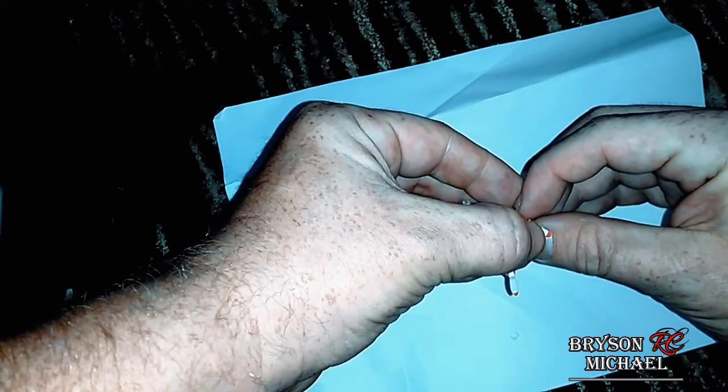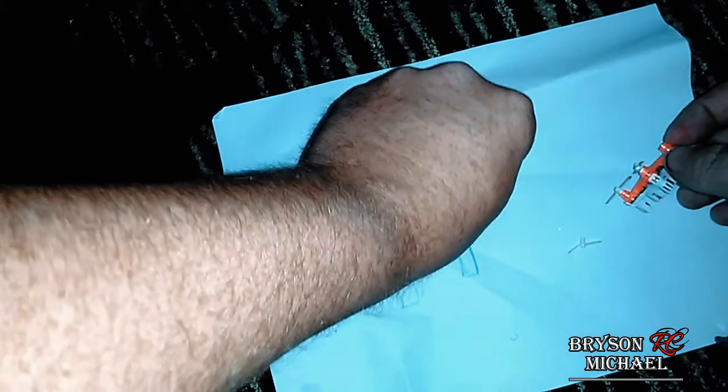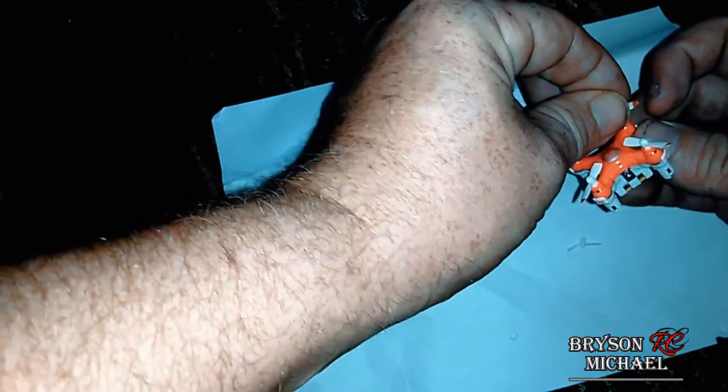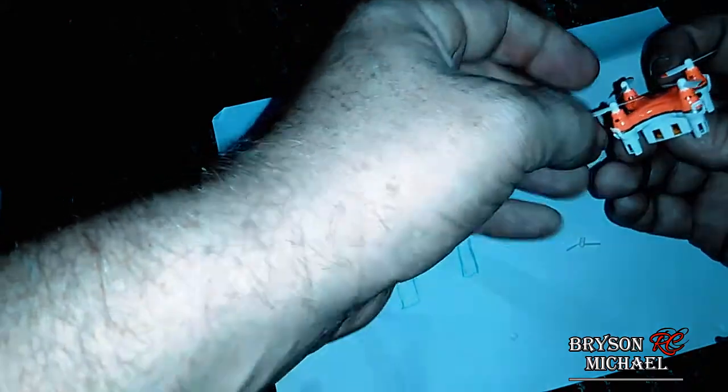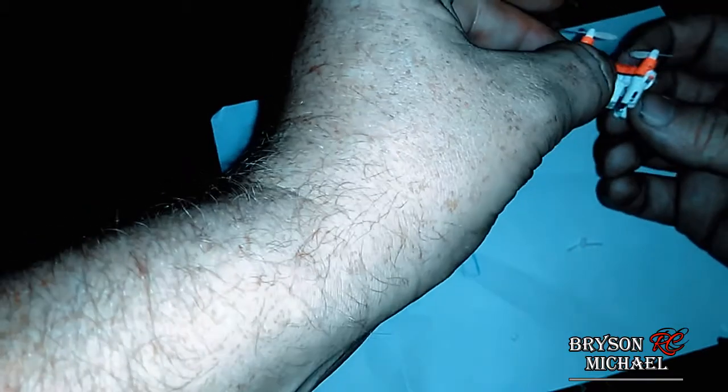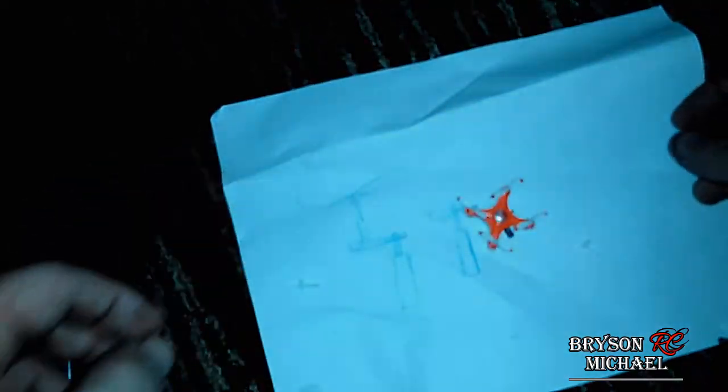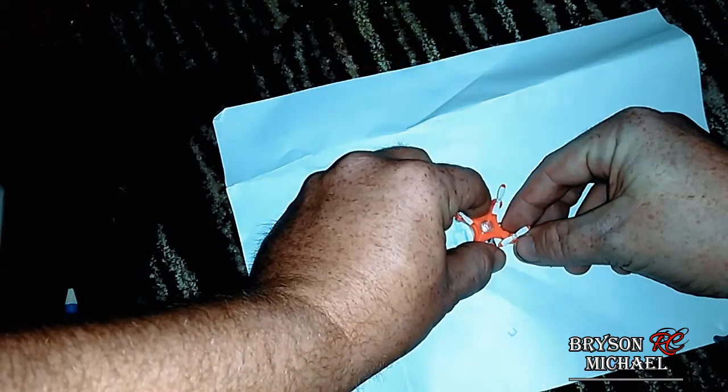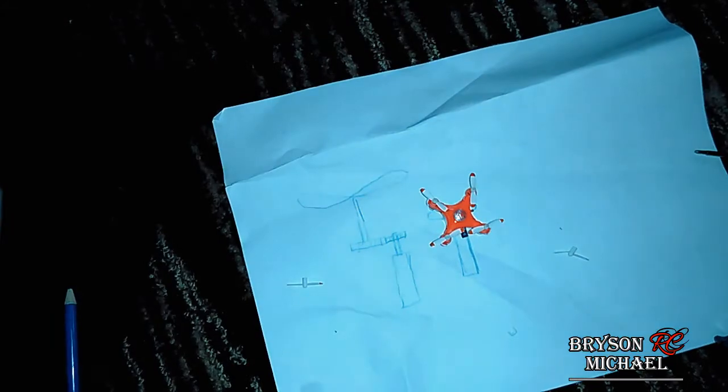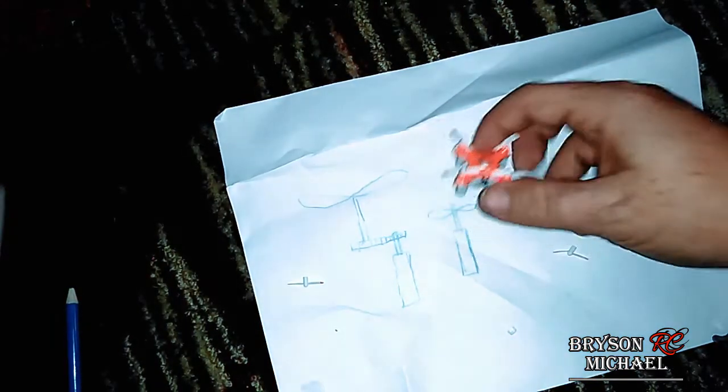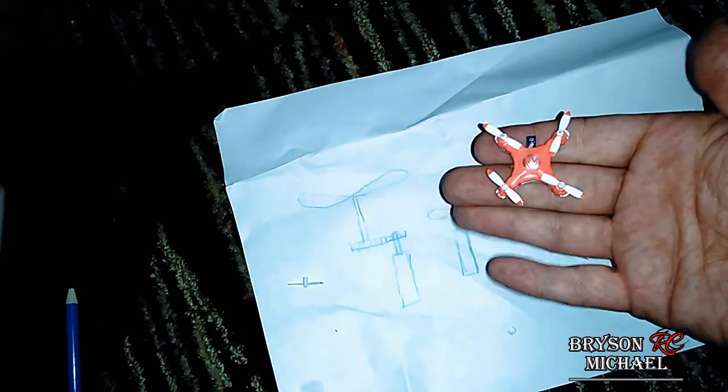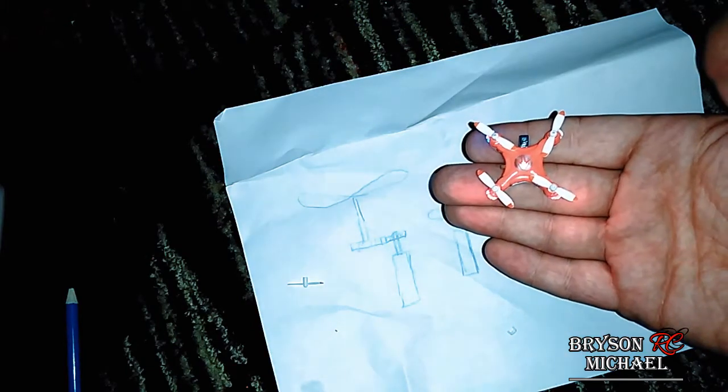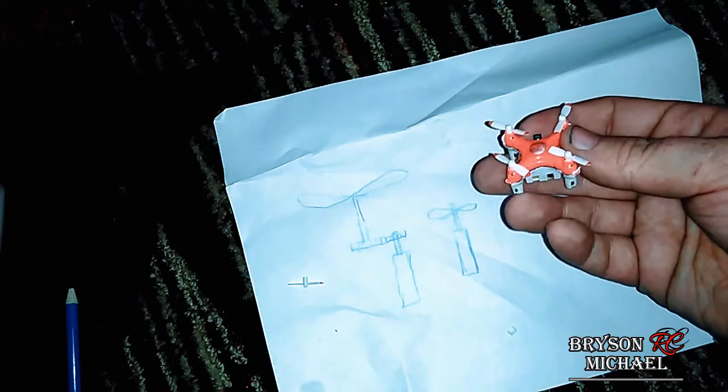And these props are super cheap if you want to buy extra ones. Usually all you need to do is go on Gearbest or Banggood, type in the quadcopter into the search bar and then just look it up, look up the parts. Now it's back together, and that's how you fix these little mini drones, and especially this little Fast Lane RC right here. We're gonna charge it up and fly it.